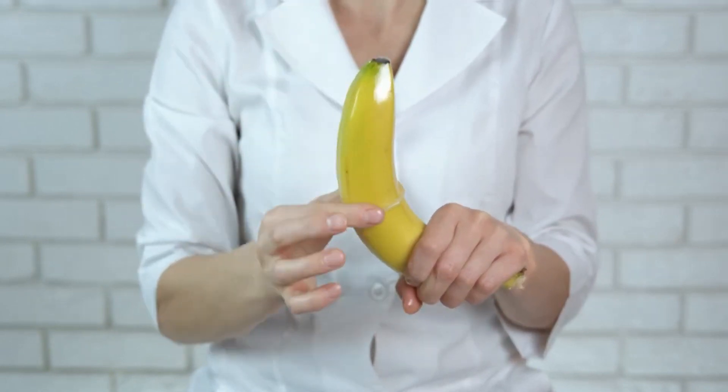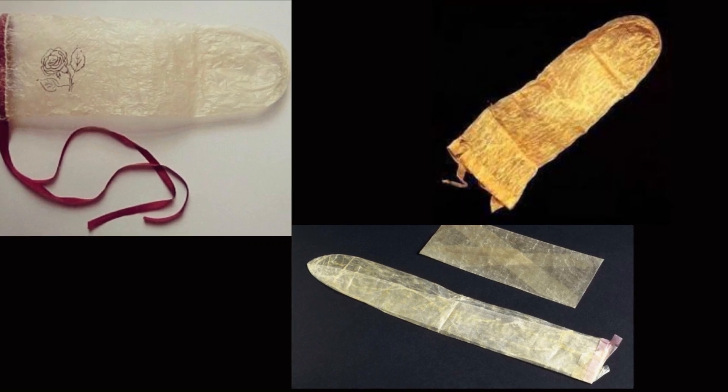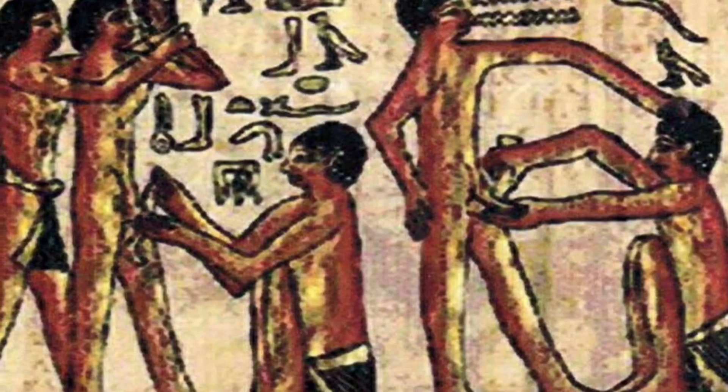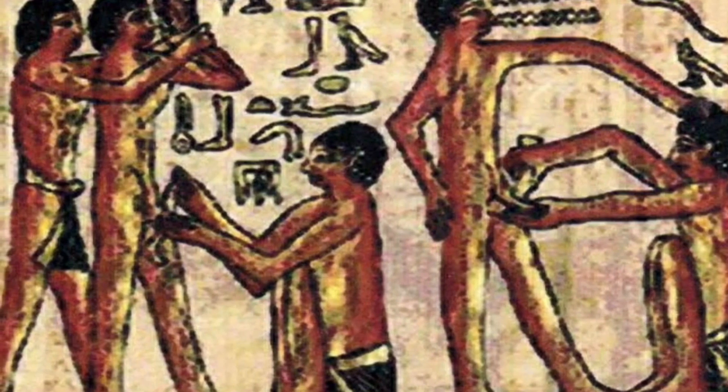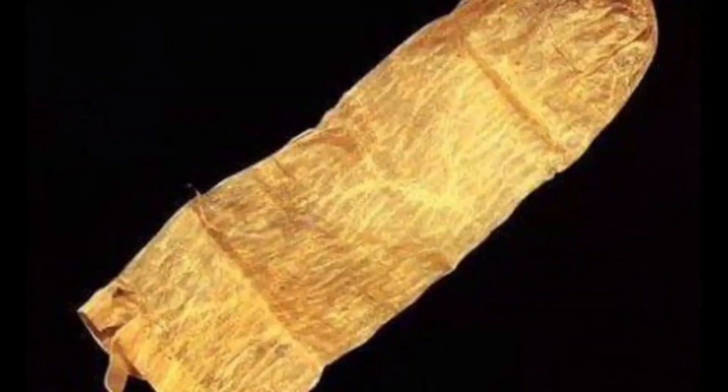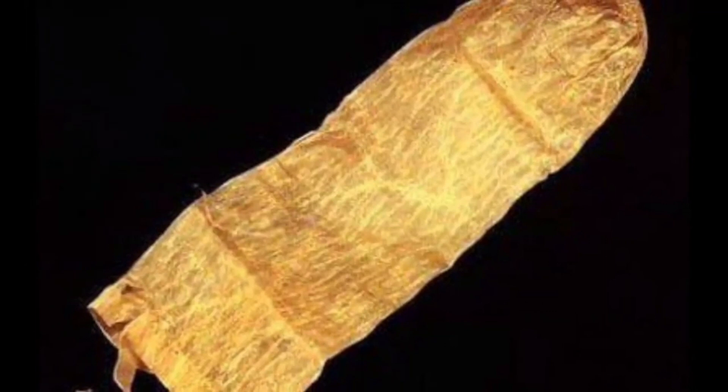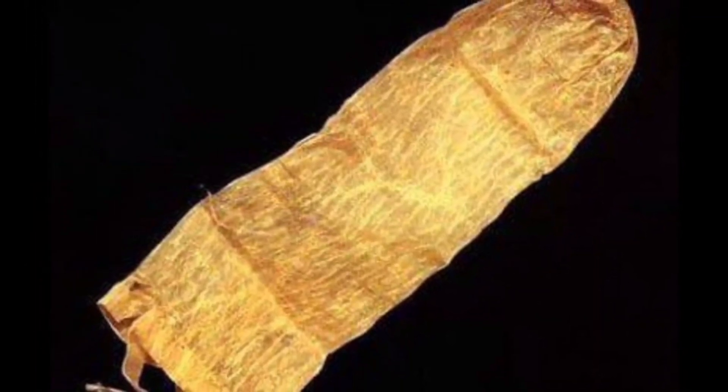Ancient Egyptians are believed to have used linen sheaths, and there's evidence of similar practices in ancient China and Rome. These early devices were more about preventing pregnancy than protecting against sexually transmitted infections.